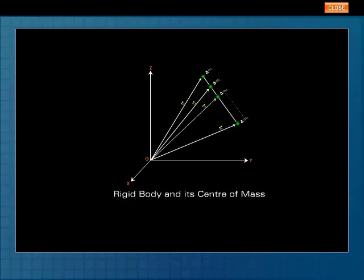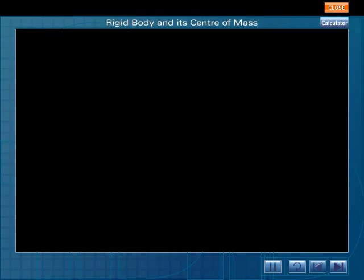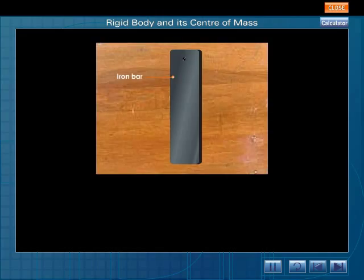Rigid body and its center of mass. Let us understand what is a rigid body with the help of this activity. Take an iron bar with a cavity. Suspend it from a nail and oscillate it in a vertical plane.